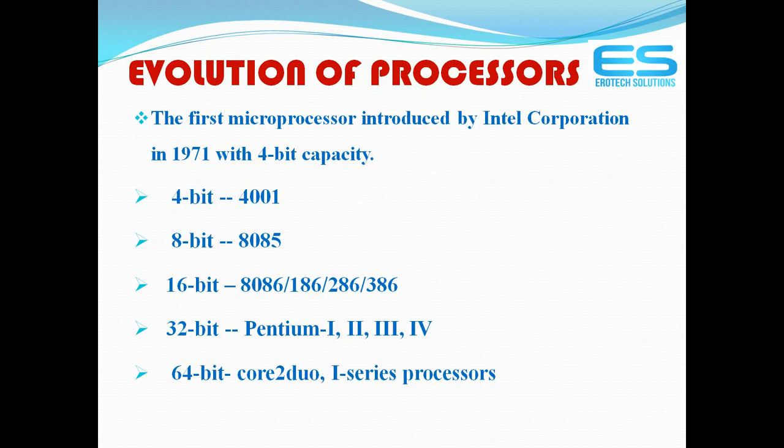Processors were introduced by Intel Corporation in 1971 with 4-bit capacity — allowing only four binary inputs and four binary outputs at a time. Next came 8-bit (like the 8085), then 8086 as a 16-bit processor, followed by 186, 286, 386, and 32-bit Pentium processors used from the 1970s through 2000. Now 64-bit processors with all i-series run in the market. This is the evolution of processors.